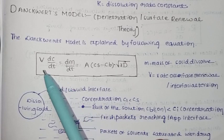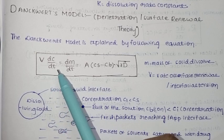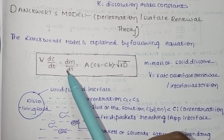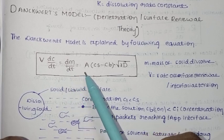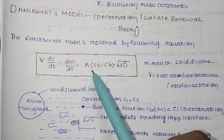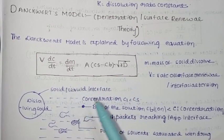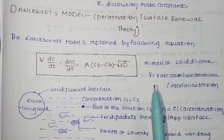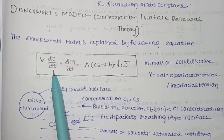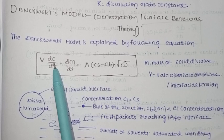This theory, Danckwerts model, is explained by the following equation: V × dC/dt = dm/dt = A(Cs - Cb)√(γD). Here, m is mass of solid drug dissolved, V is rate of rate generation/interfacial characterization, dC/dt is the dissolution rate constant, and dm/dt is the mass with respect to time.